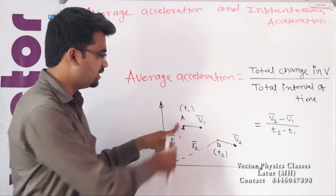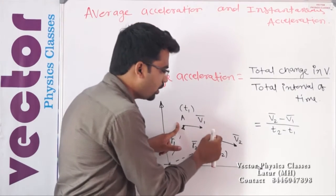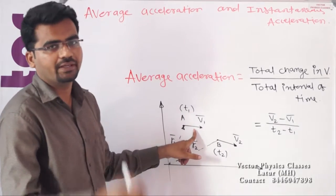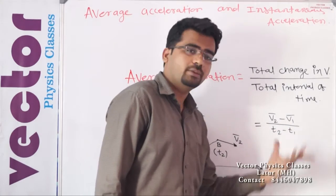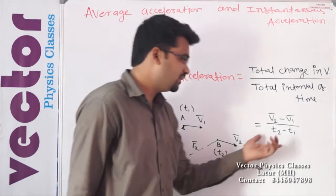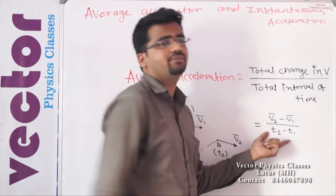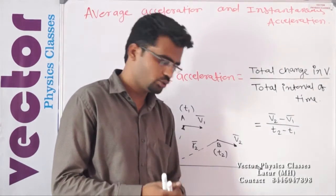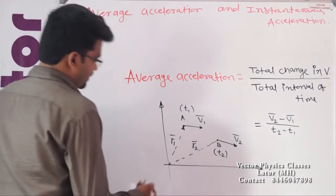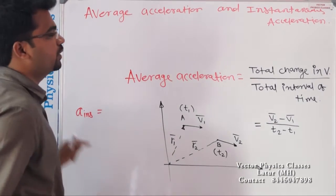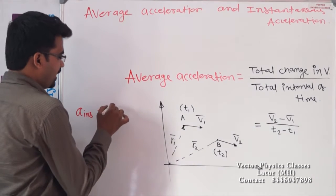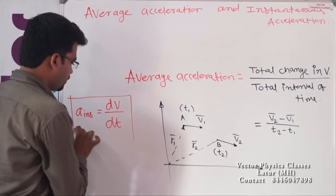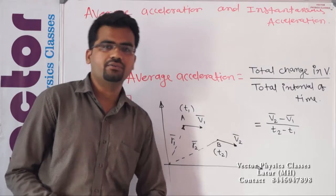That is, it just depends on the velocity at position A and the velocity at position B. So V2 minus V1 divided by T2 minus T1 is average acceleration. And likewise, if T2 minus T1 is tending towards 0, then that acceleration is called instantaneous acceleration. So instantaneous acceleration is equal to dV by dt.